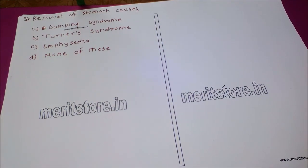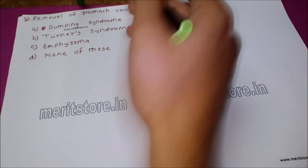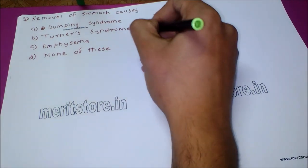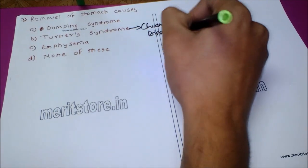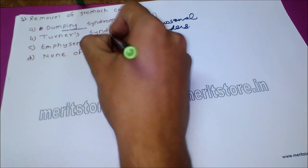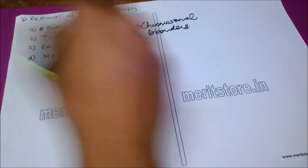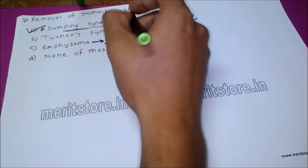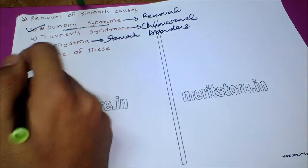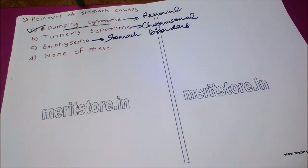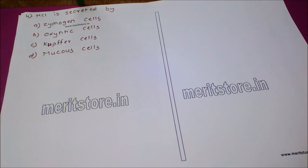The next question: removal of the stomach causes — option A: dumping syndrome, option B: Turner syndrome, option C: emphysema, option D: none of these. Turner's syndrome is a chromosomal disorder; emphysema is not related to the stomach. Dumping syndrome is a disorder related to the stomach, caused by removal of the stomach. So the answer is option A, dumping syndrome.